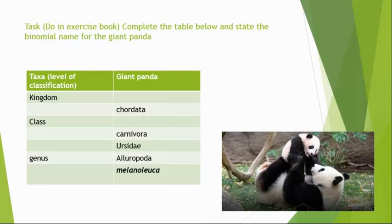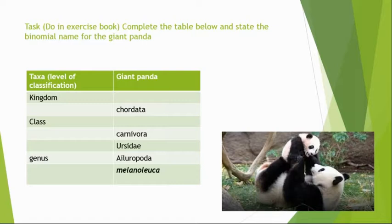There were a couple of other tasks in this PowerPoint. If you've done it, find your work and go through it with a green pen. This is the type of question you might see in a GCSE exam for two marks. It should be an easy two marks for people going in with knowledge. The binomial name for giant panda — you wouldn't be expected to know that. But you are expected to know kingdom, phylum, class, order, family, genus, species, so filling in the left-hand side should be a doddle.